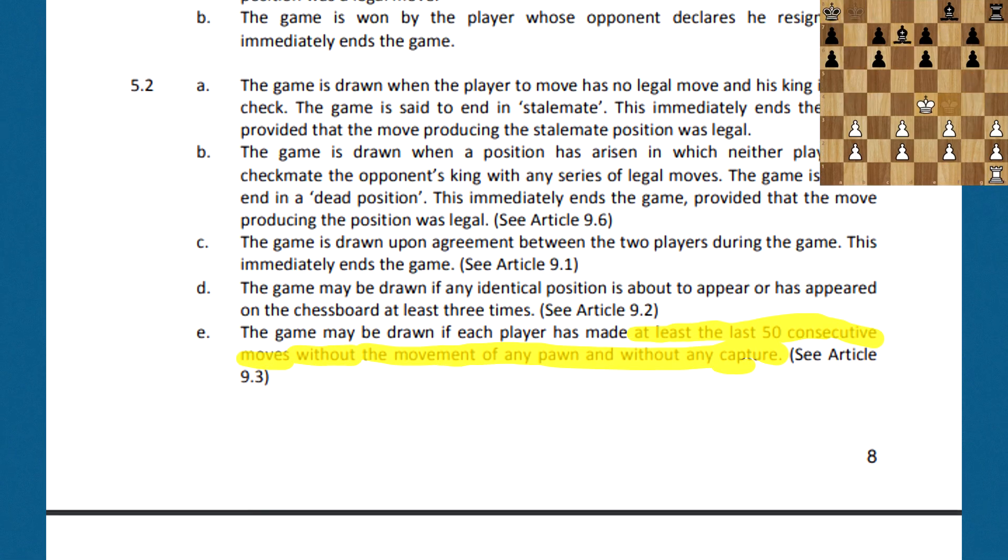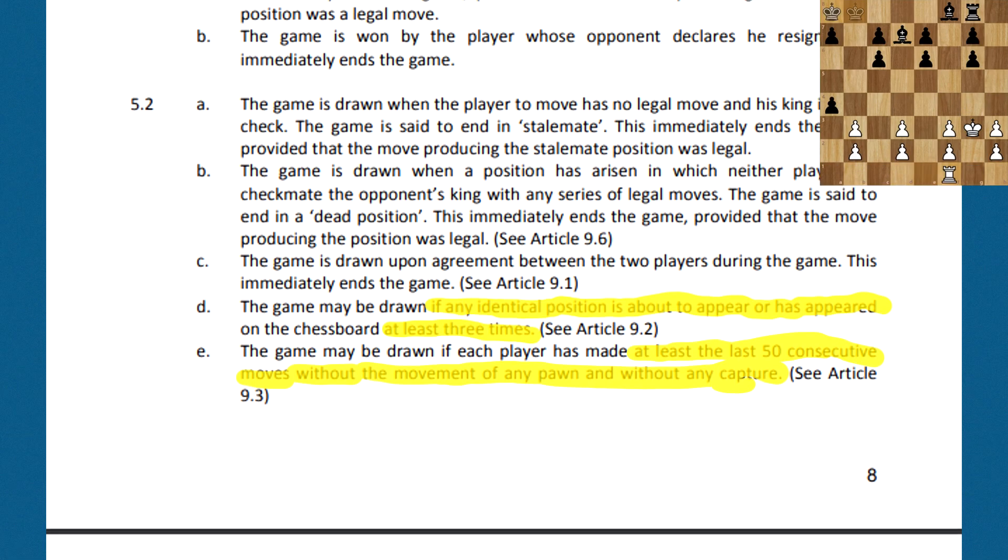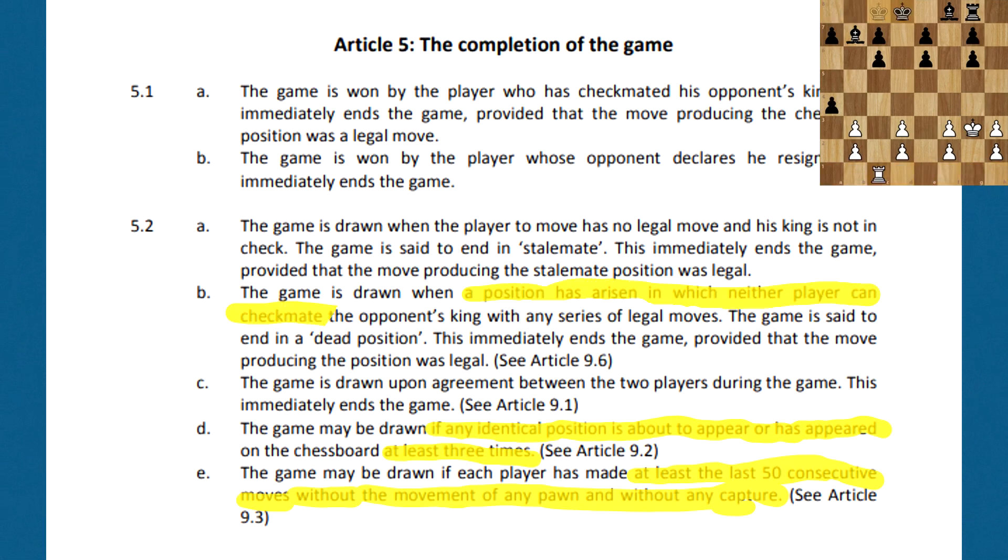Next, we have the three-move repetition. Simply put, if a position is repeated three times at any point, a draw can be claimed. The third rule is insufficient material. If there isn't sufficient material to checkmate on the board, then the game will end in an immediate draw.